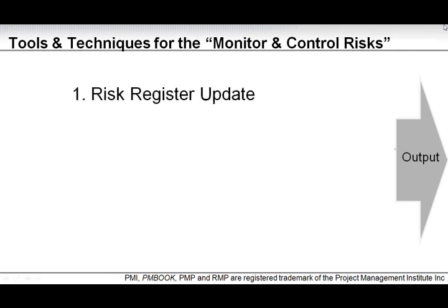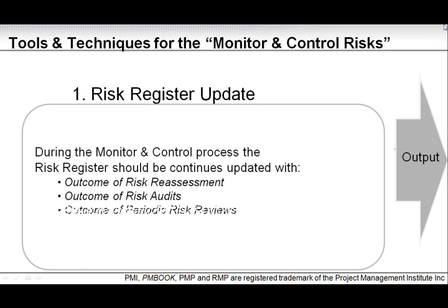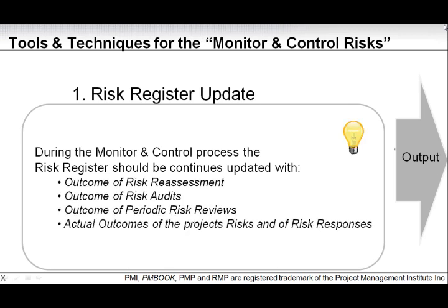Let's look at the first output: risk register update. Just as with other processes, during the monitoring and control process the risk register should be continuously updated with the outcome of risk reassessments, risk audits, periodic risk reviews, and actual outcomes of the project's risks and risk responses — not the planned outcomes. The risk normally has a planned outcome, but as you execute your risk response, you should record the actual outcome.